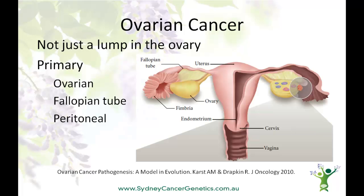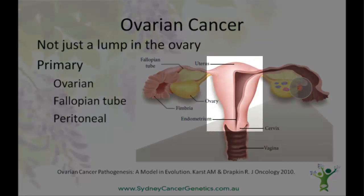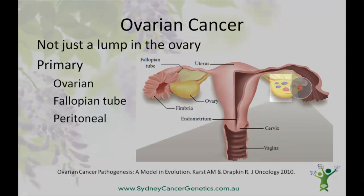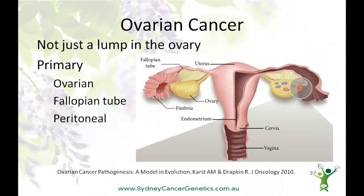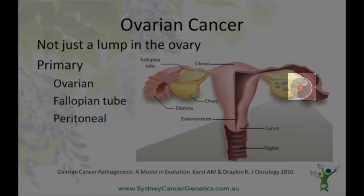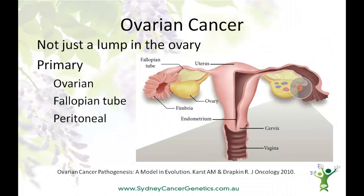Let me show you on this drawing from the Journal of Oncology what I'm talking about. This is the ovary, this is the fallopian tube, and this is the uterus or womb. On this side you can see the normal follicles — cyst-like structures that grow during a woman's menstrual cycle and rupture to release an egg. This, on the other hand, is a cancer. It used to be thought that ovarian cancer started inside the ovary or on its surface layer of cells. We now know that in many cases, if not most cases, the changes that lead to a cancer start in the lining of the fallopian tube.